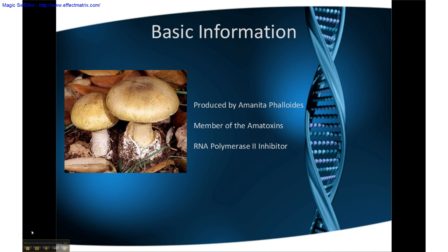Amatoxins share the general structure of cyclic peptide rings. Their major toxic mechanism is the inhibition of RNA polymerase II, a vital enzyme in the synthesis of messenger RNA. This inhibition halts cell mitosis and can eventually lead to liver failure and death.